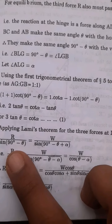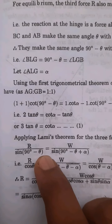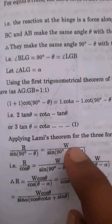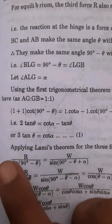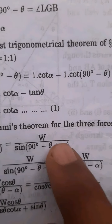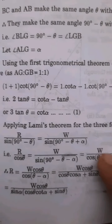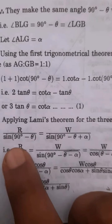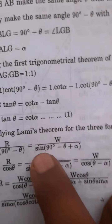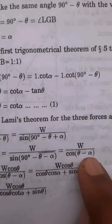Using Lami's theorem, each force is proportional to the sine of the angle between the other two. So R is proportional to sin of (180 − α). We get R/cos θ = W/cos(θ − α). Using the identity cos(θ − α) = cos θ cos α + sin θ sin α, we can expand and simplify.